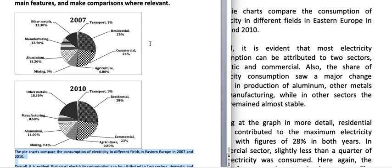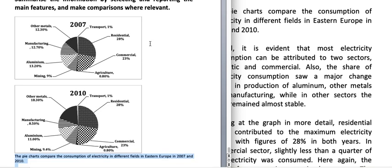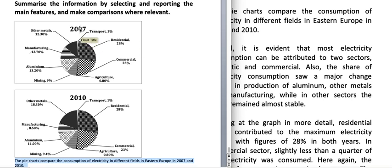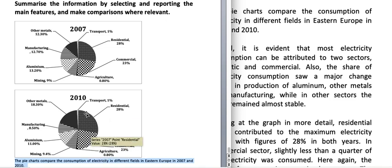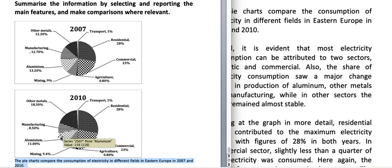So this is the question — you can see these are the two pie charts. This is for 2007 and this is for 2010, and electricity consumption is shown in different sectors like residential sector, commercial sector, agriculture, transport, other metals, manufacturing, aluminium, and mining. In all these you have to make comparisons.